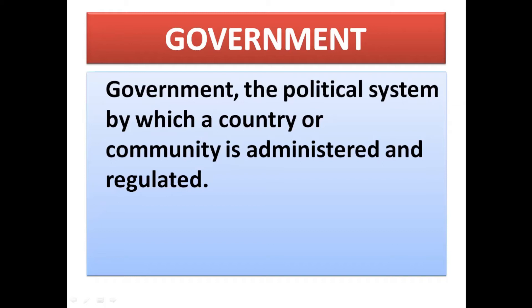The definition of government is: the political system by which a country or community is administered and regulated. Government derives from the Greek word gubernimos, which means to pilot a ship. A ship represents a state, and the government is the pilot — it guides people toward a better life and helps avoid crimes, wars, and economic troubles. The government protects us from all those types of difficulties in the country.